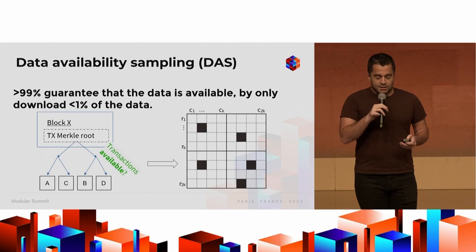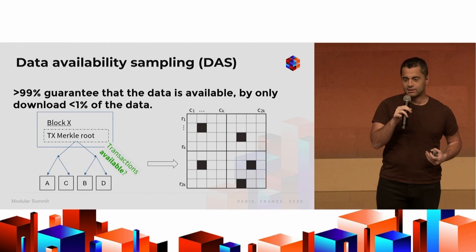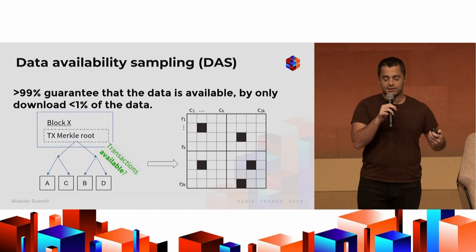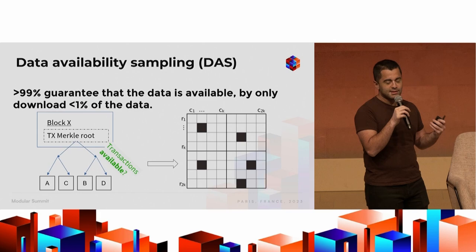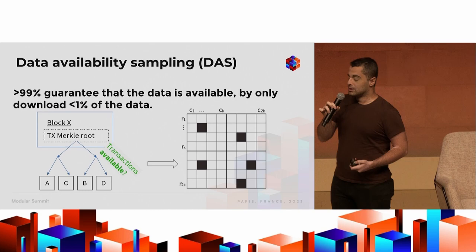Because data availability and consensus are the core primitives of blockchain, we've figured out scalable ways to scale that using a primitive called data availability sampling. With data availability sampling, you have an over 99% guarantee that almost all the data is available by only downloading a very small portion of the data. This means users no longer have to download every other user's transaction, so you can scale blockchains more directly and in a more practical way.